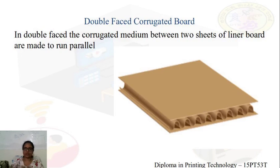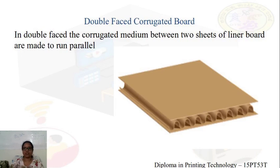Double-faced corrugated boards are used as a protective device for products. Various varieties of pads, liner pads, tubes, and partitions are used for packing many kinds of goods to protect them from external or internal damage. It is largely used in packing of cutlery, glassware, and many fragile articles and earthenware containers.